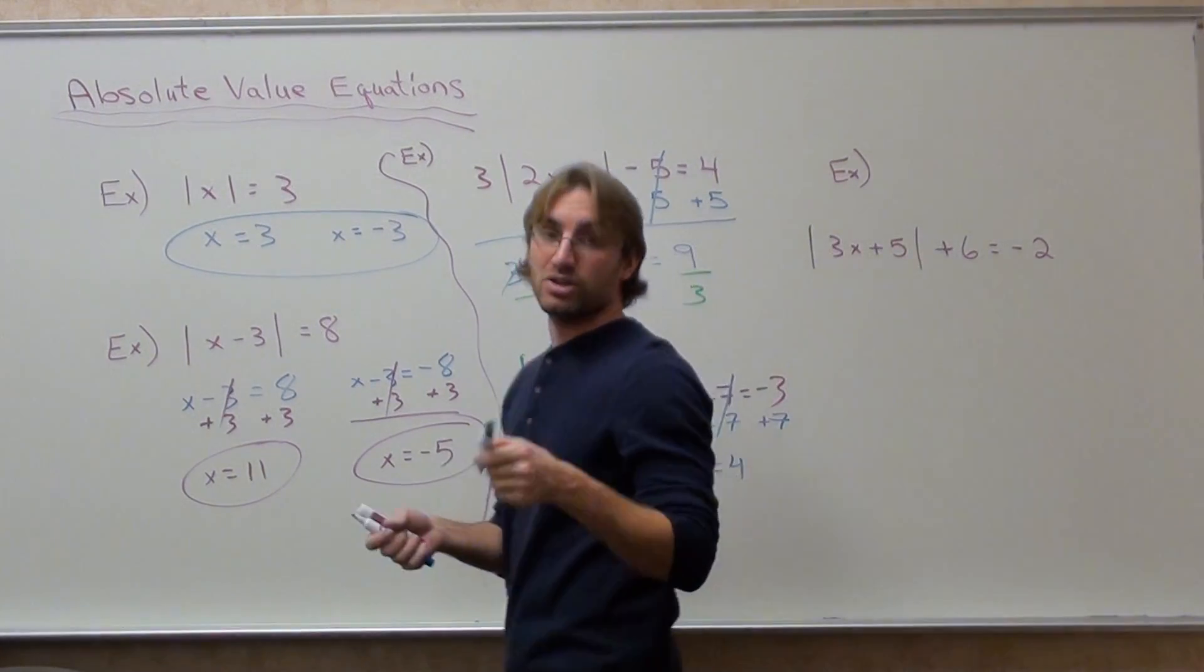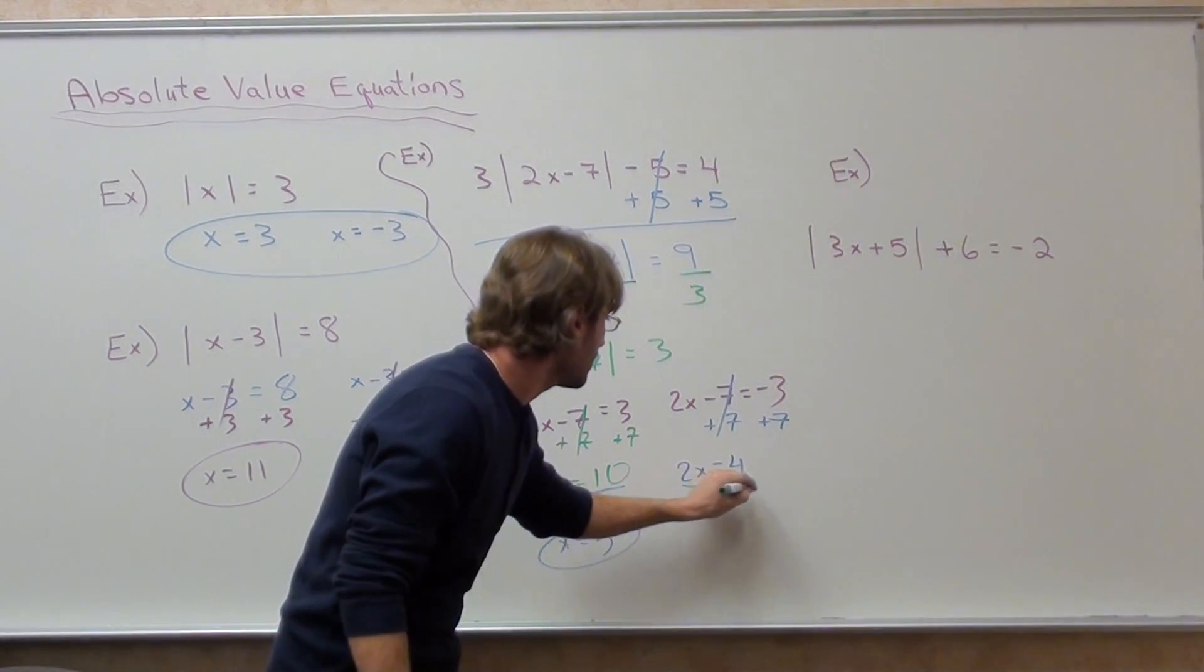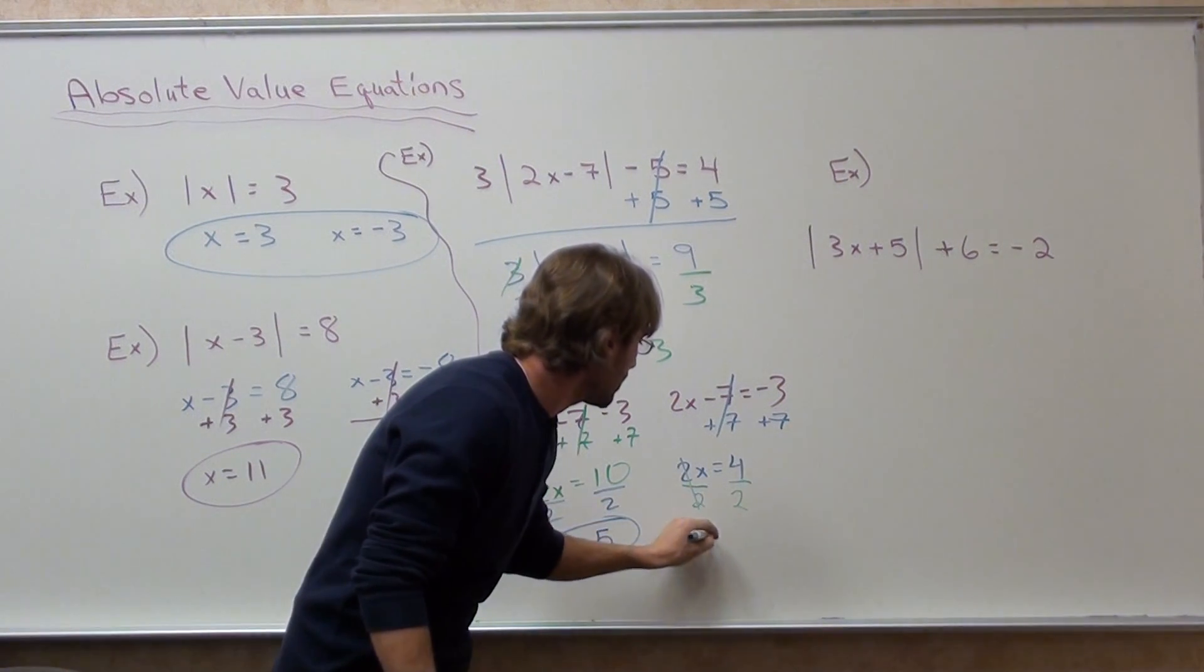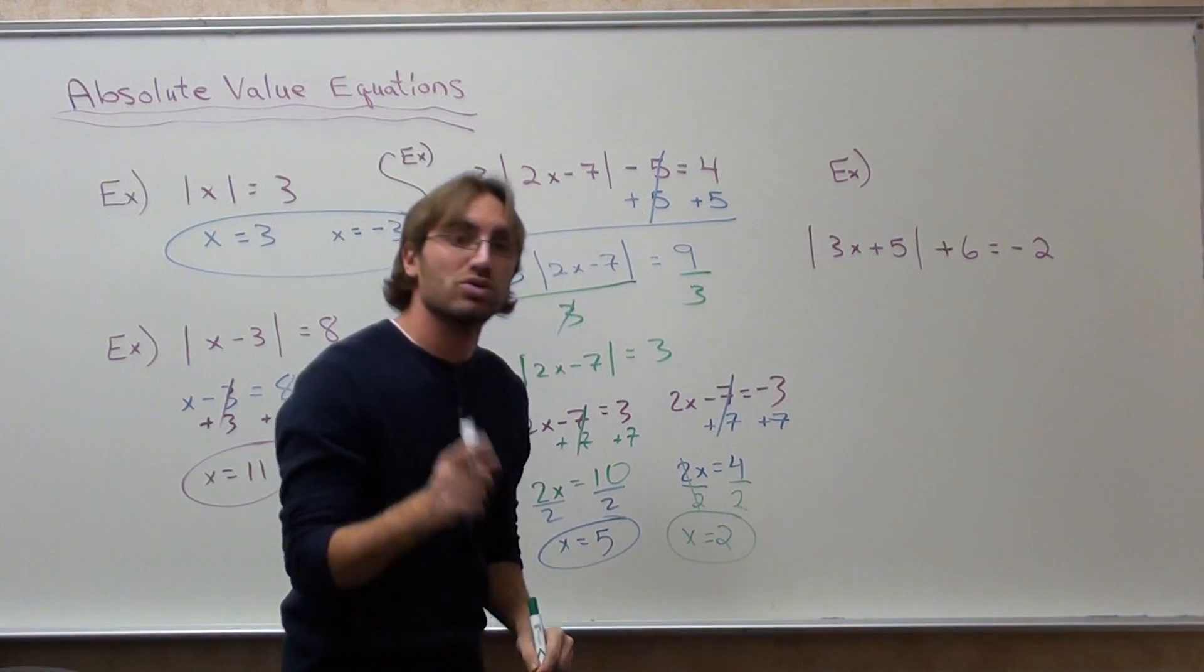Two x equals four. Divide by two on both sides. X equals two is the other answer.